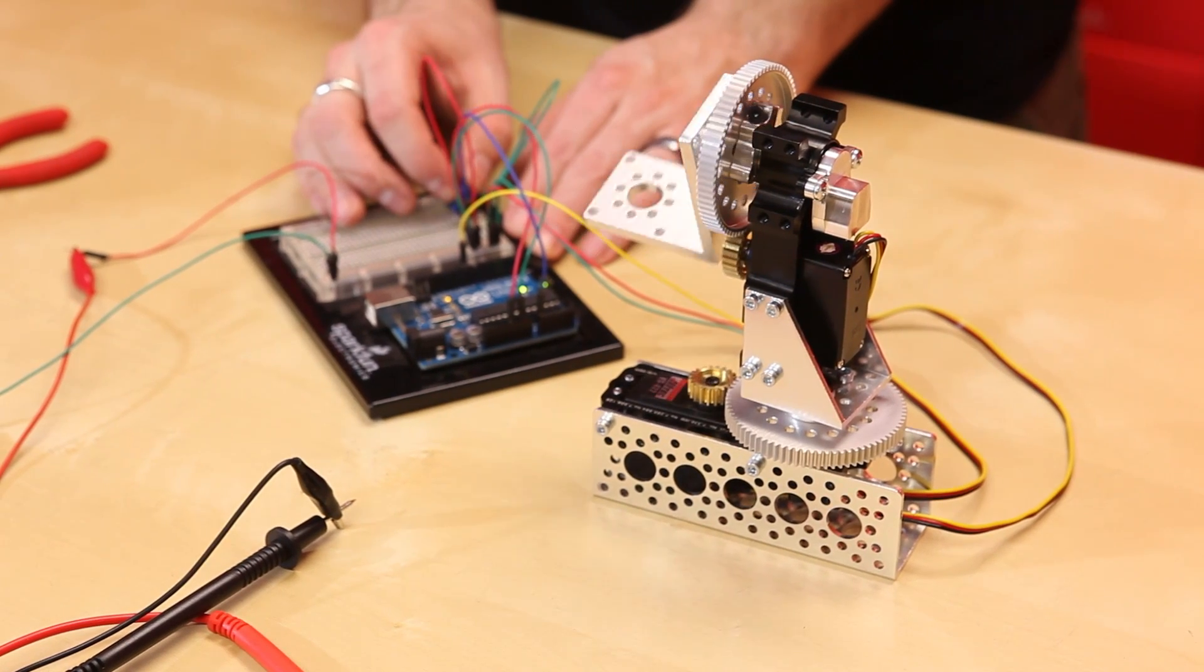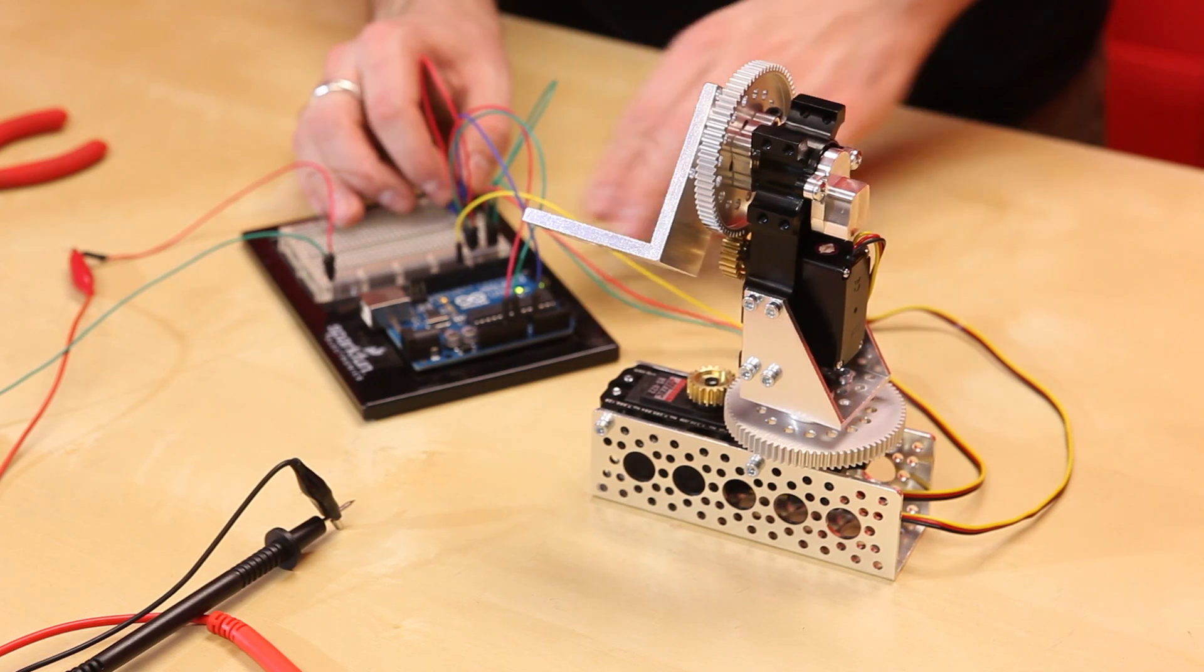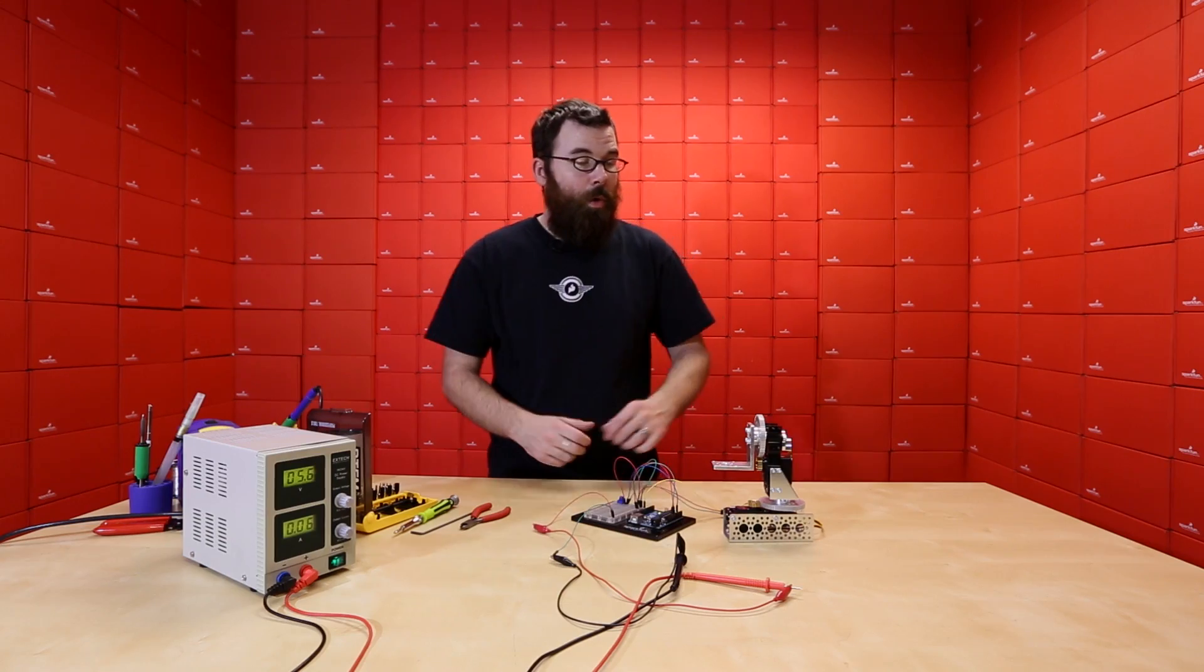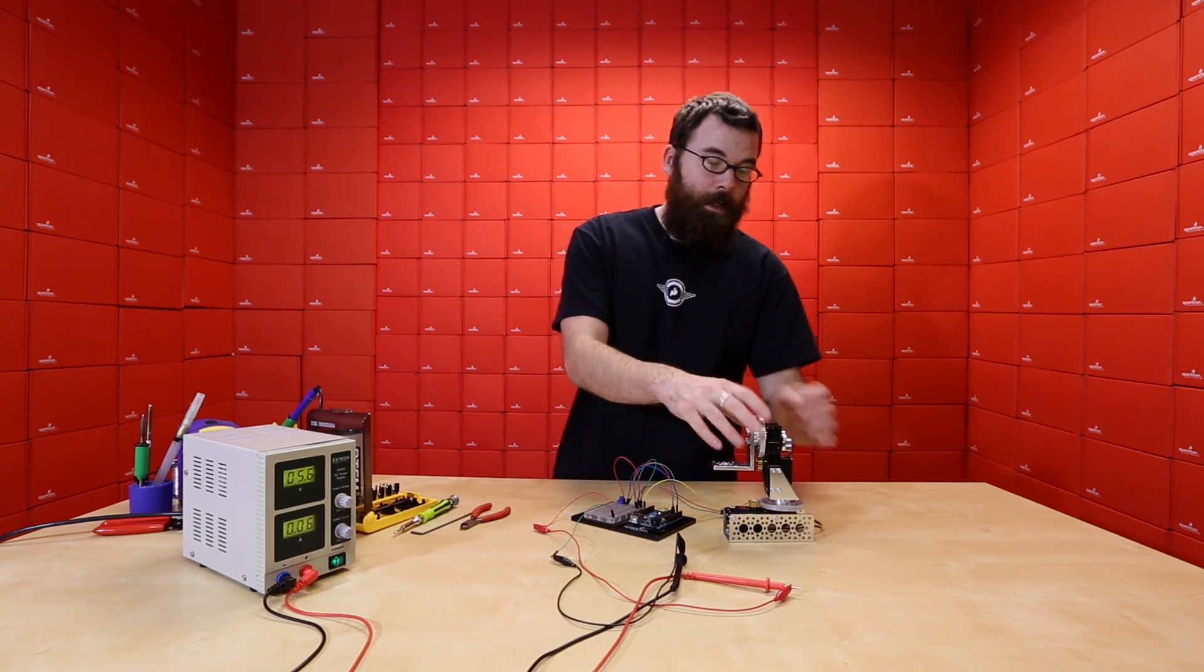So as you can see, we have a very limited range of motion here because of the gearing of the servo. So what we're going to do is remove the pot and connect it up here.